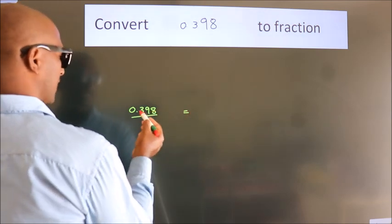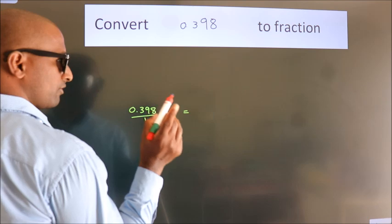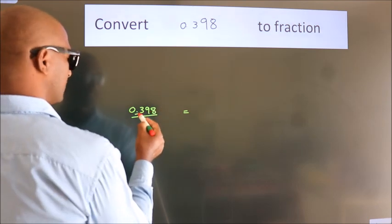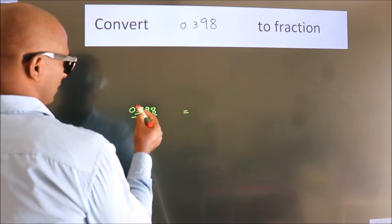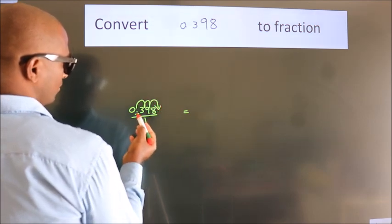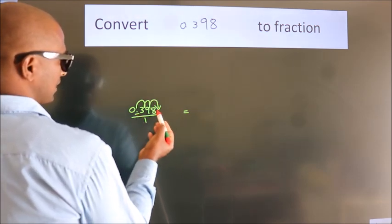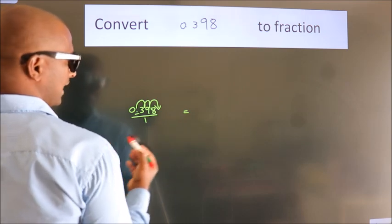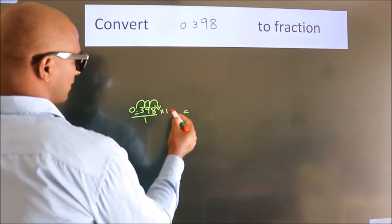To convert this to fraction, we have to move this decimal after 1, 2, 3 numbers. To move this decimal after 3 numbers, we have to multiply it with 1000.